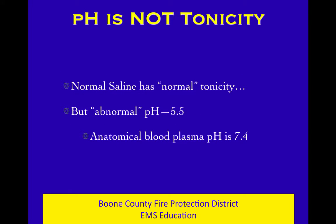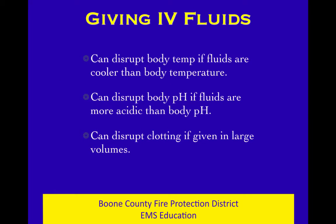We're not talking about pH here — we're talking about tonicity. Normal saline is 'normal' because it is isotonic, having the same salt content as body fluid. It has nothing to do with pH. In fact, normal saline has an abnormal pH of 5.5, while normal body pH is 7.4. So normal saline is acidic compared to body pH. Give a large volume of normal saline and you can lower the body's pH, which creates an acidotic environment that is not good for cellular function.